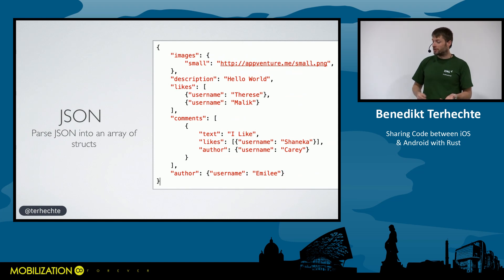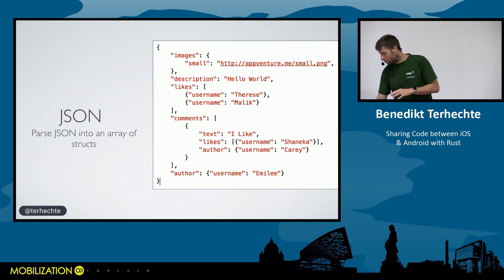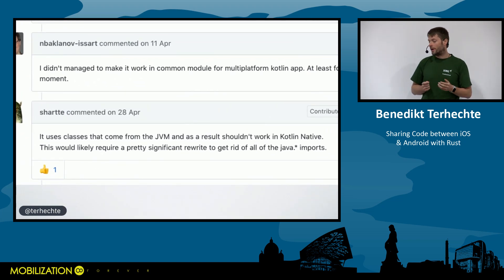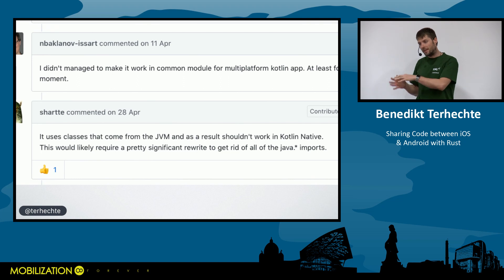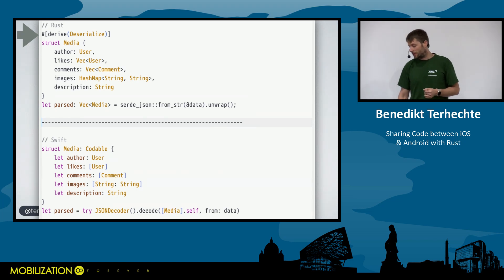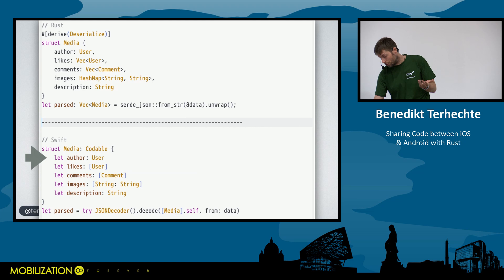The last benchmark is JSON parsing, since we parse a lot of JSON every day. For Kotlin Native I couldn't find a way to do JSON parsing into classes without serialization — apparently it requires a significant rewrite to remove Java imports — so I could only compare Swift and Rust. In Rust you use a `deserialize` annotation (like `Codable` in Swift) and declare a struct. Then you tell the compiler to convert a string into an array of media objects.